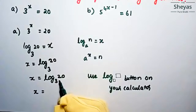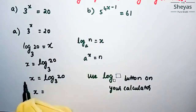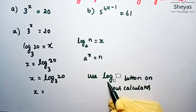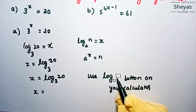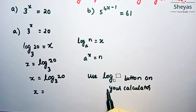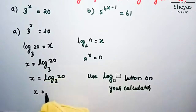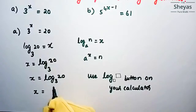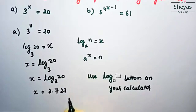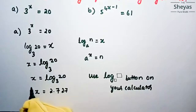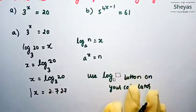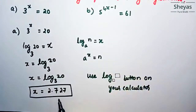Here we have to find this value using the calculator. There will be a log button — the base value and the value — this will be in the calculator. So just use a scientific calculator and you will get the exact value. The value for log to the base 3 of 20 is 2.727. So x is equal to 2.727 is the answer.